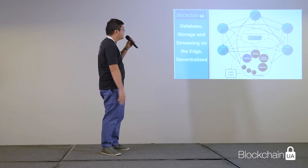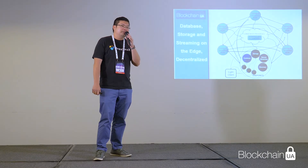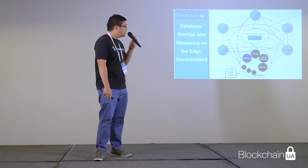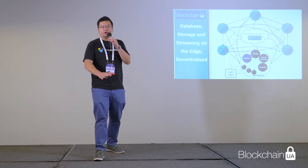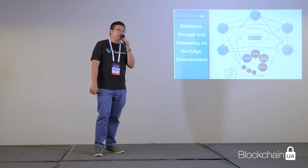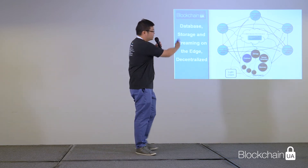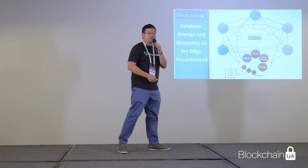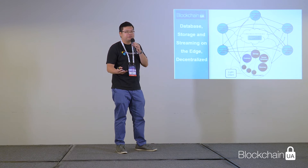This is an example of how a decentralized network works without any single point of failure from a centralized architecture. The data, storage, and information are distributed across different nodes. One thing good about distributed storage is that when you upload a file, it is shattered into many pieces, and those pieces of information are distributed across different nodes.